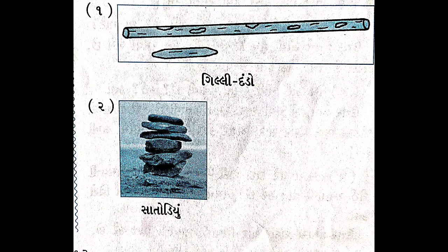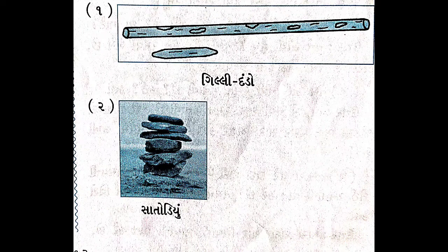આ ચિત્રમાં બે રમત છે. પહેલી છે ગિલ્લી દંડો, અને બીજી છે સાતોળીં. હવે ચિલ્ડ્રન, આ ગિલ્લી દંડો - ચિત્રમાં જોઈ શકાય છે. ગિલ્લી દંડાની રમતના સાધનો ગિલ્લી અને ડંડો છે. આ રમત જૂની રમત છે. ગામડાના બાળકો આજે પણ આ રમત રમે છે. સાધનોનો ખર્ચ થતો નથી, એટલે ઘણા બધા બાળકો રમી શકે છે. ગિલ્લી આંખ પર ન વાગે તે માટે બરાબર કાળજી રાખવી જરૂરી છે.